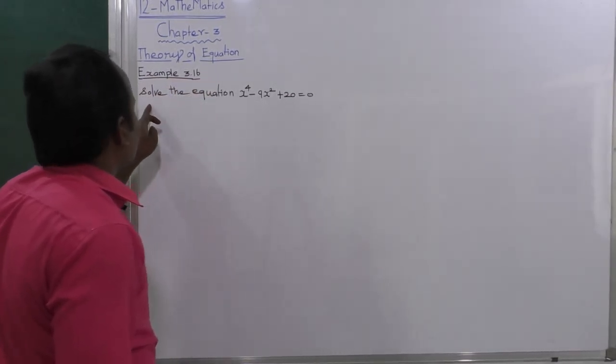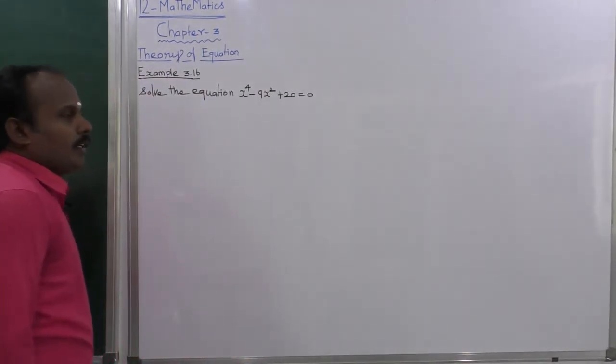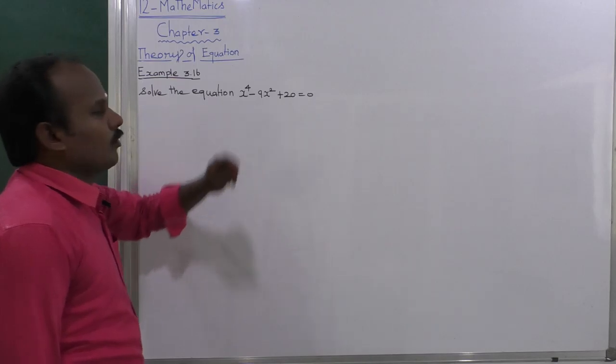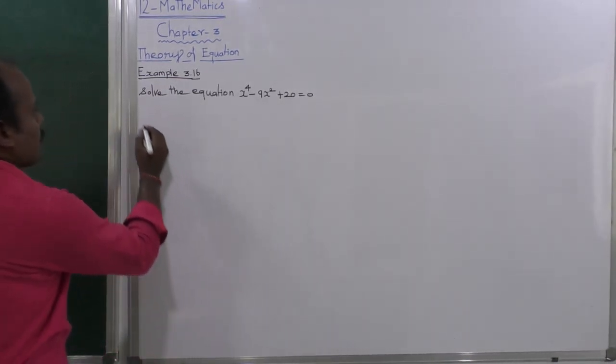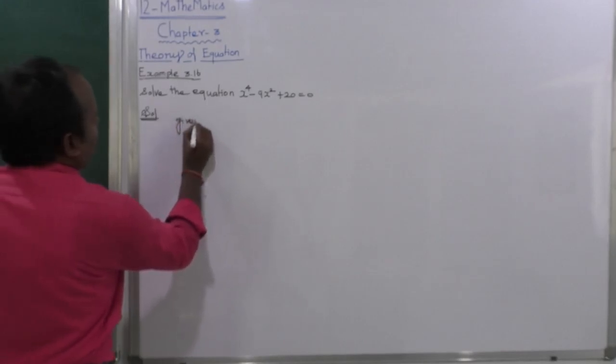Example 3.16. Solve the equation x^4 - 9x^2 + 20 = 0. This is a fourth-degree equation, so the solution will have four solutions. First, the given equation is: